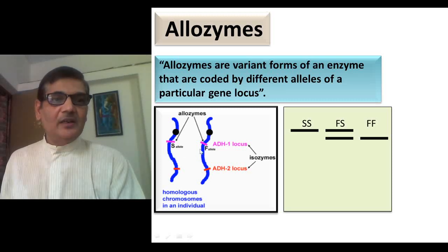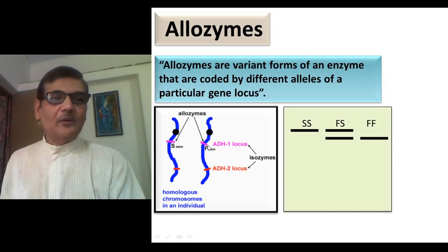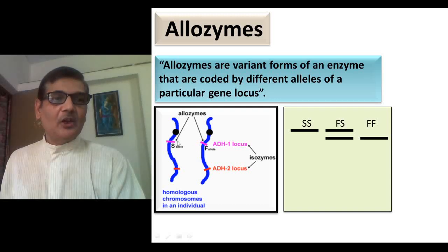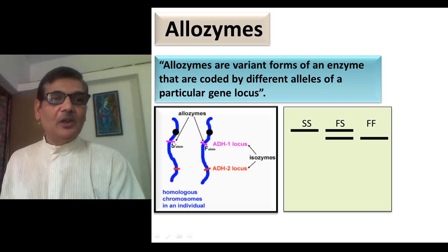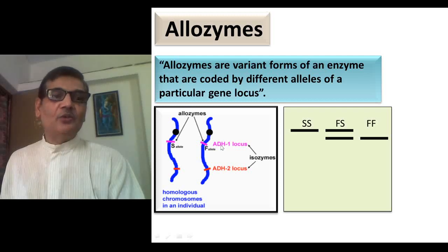The ADH1 locus is represented by two different alleles: one is the S allele and the other is the F allele. S stands for slow and F for fast. It means in the gel, the product of one allele — the ADH protein — will be moving slower, and in the other one, the other protein will be moving faster. These are two different variants of the same enzyme, ADH, which stands for alcohol dehydrogenase.